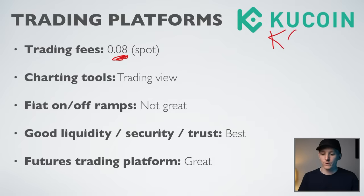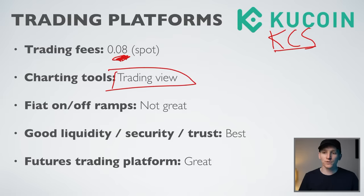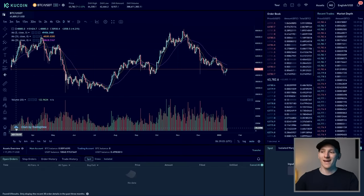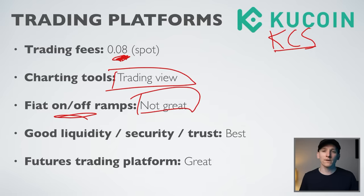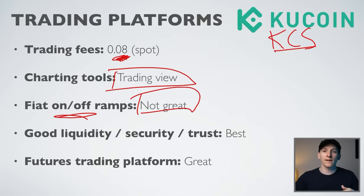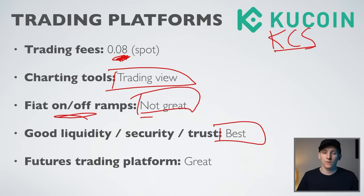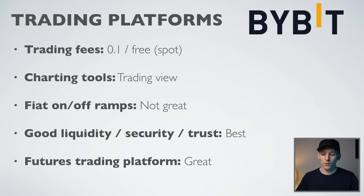By paying fees in KCS token, you can reduce your KuCoin fees to around 0.07%, and higher trading volumes reduce it further. They also use TradingView — exactly the same as Binance. Fiat on and off ramps are also not great: you can put money on with a card, but bank deposits vary by currency. All links are in the description. Liquidity and security are very good — I've used them a lot with no issues. Their futures trading platform is comparable to Binance's.